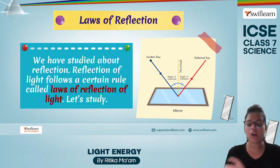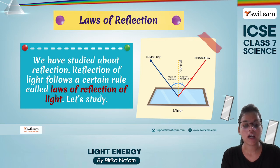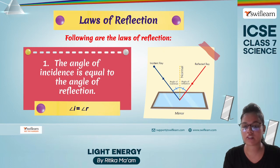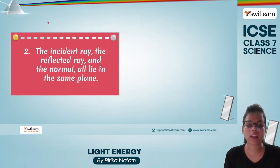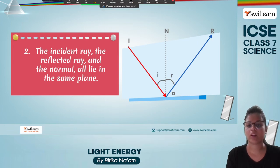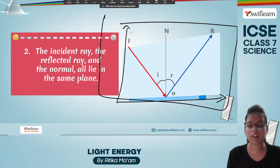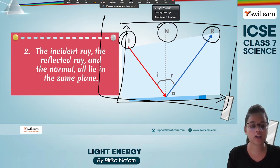Laws of reflection: reflection follows certain rules. First, the angle of incidence is always equal to the angle of reflection — if the angle of incidence is 30 degrees, the angle of reflection will also be 30 degrees. Second, the incident ray, the reflected ray, and the normal all lie in the same plane. This plane contains all three: the angle of incidence, the angle of reflection, and the normal to the point of incidence.